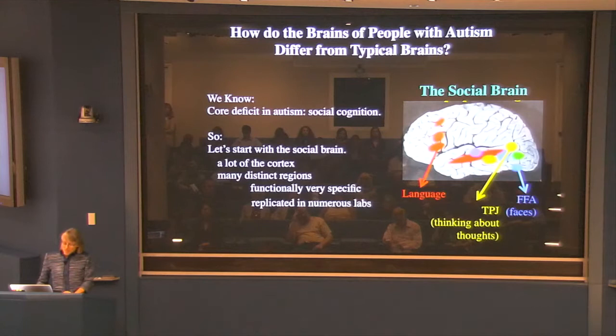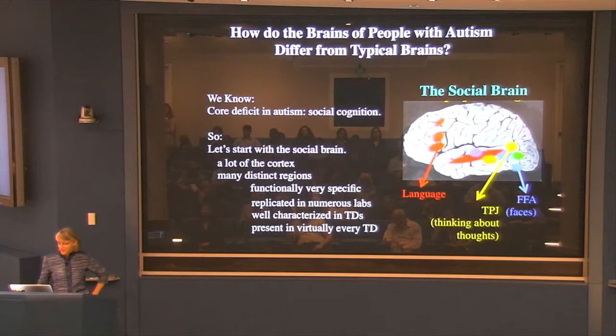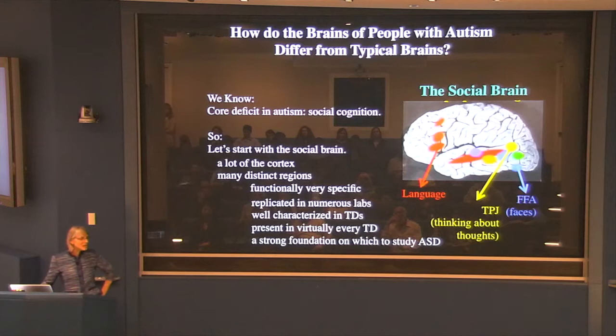Ev Fedorenko, working with me over the last five years, has collected really impressive data showing that those language regions are very specifically involved in processing language — they don't do double duty for mental arithmetic, working memory, cognitive control, or other functions. These regions are very specific, replicated in many different labs, and present in pretty much every typical subject. They're just part of the basic architecture of the human brain.